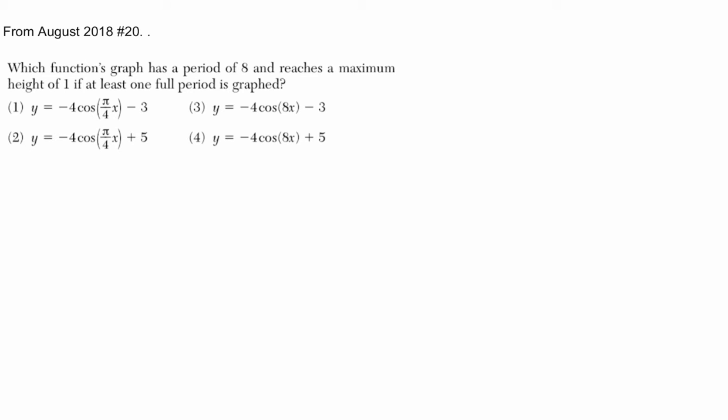Okay, so we're told here that the period is 8. So first of all, that helps us immediately, because to get this coefficient of x right here, we do 2π over the period. So the period is 8, that coefficient should be 2π over 8, which is just π over 4.